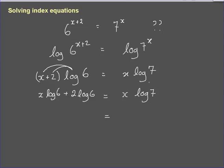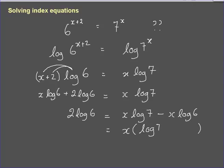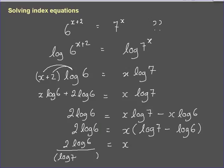I then want to collect terms that have x as part of them. I've got this x log 6 over here. I'm going to subtract that from both sides so that I can then factorize. x times log 7 minus log 6 equals 2 log 6. And then I'm going to divide both sides by this factor here, this log 7 minus log 6. So x equals 2 log 6 divided by log 7 minus log 6.